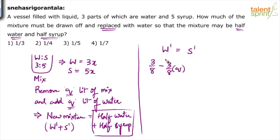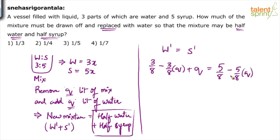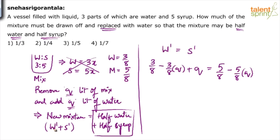We added q liters of water, so final water equals initial water minus the water removed through the mixture plus the water added: (3/8) - (3/8)q + q = final syrup. Initial syrup was 5/8. When you remove q liters of mixture, 5/8 of q syrup comes out. So final syrup equals (5/8) - (5/8)q. These two are equal — find the value of q.